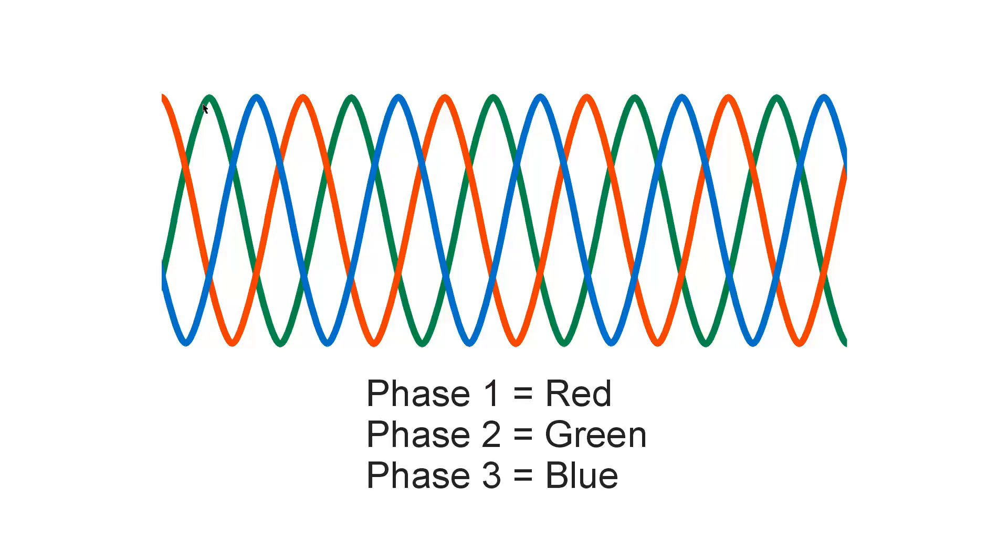Here what I'm showing is three sine waves: phase one in red, phase two lagging phase one by 120 degrees and shown in green, and phase three lagging phase two by another 120 degrees, shown in blue.